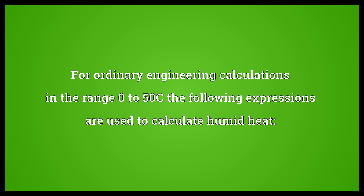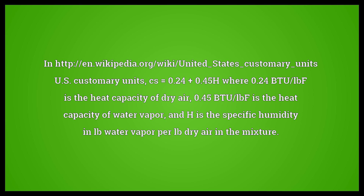For ordinary engineering calculations in the range 0 to 50°C, the following expressions are used to calculate humid heat. In U.S. customary units: Cs = 0.24 + 0.45H, where 0.24 BTU/lb°F is the heat capacity of dry air.